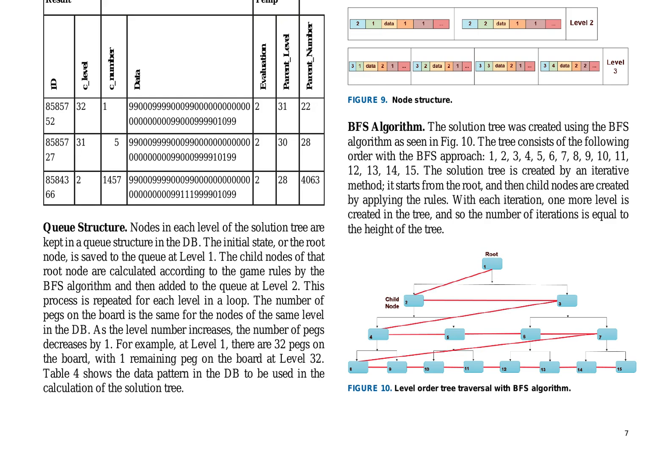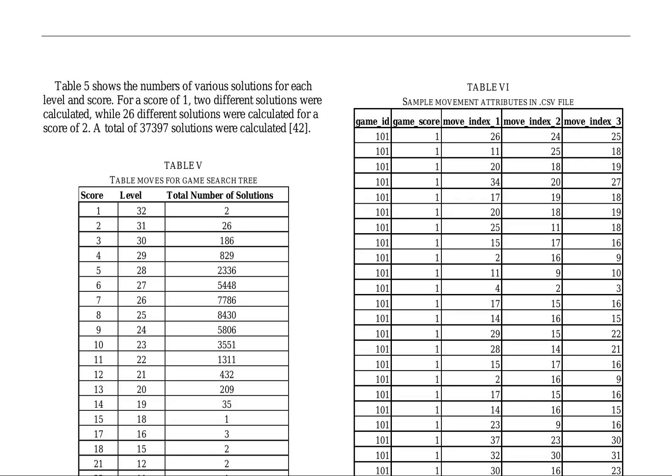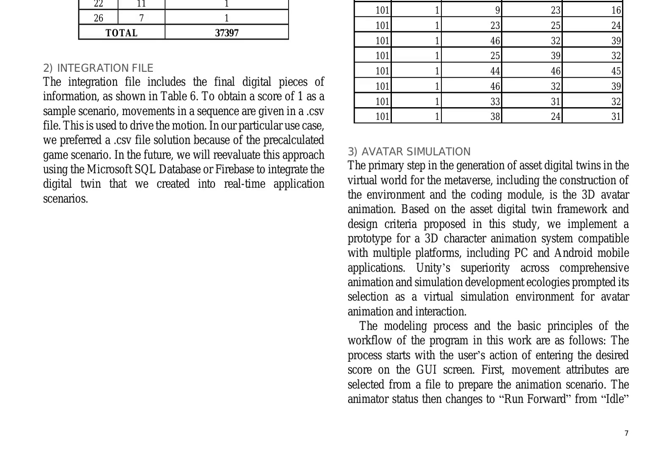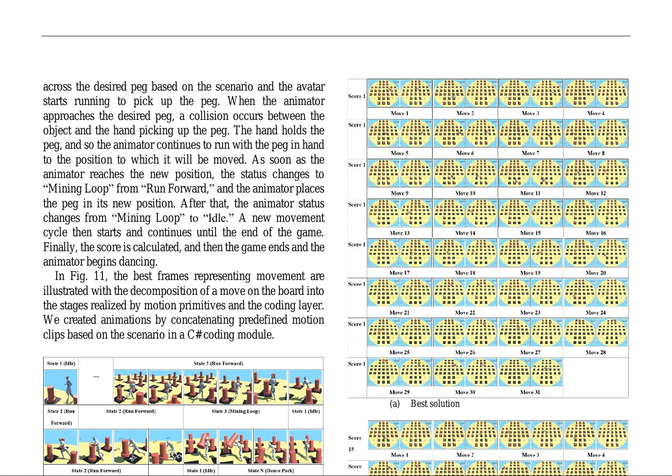The solution tree is calculated up to level 32 for a score of 1, with 2 solutions, and up to level 26 for a score of 2, with 26 solutions. The total number of solutions calculated is 37,397. The integration file includes the final digital pieces of information, using a .csv file for movement sequences. The avatar simulation is based on the asset digital twin framework, using Unity for 3D character animation across multiple platforms. The modeling process starts with user input for desired scores, selecting movement attributes from a file for animation scenarios, generating smooth animations based on predefined scenarios using motion primitives.